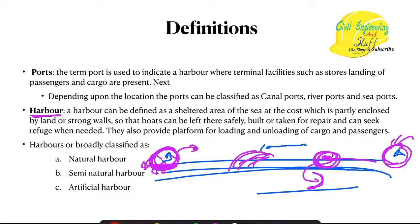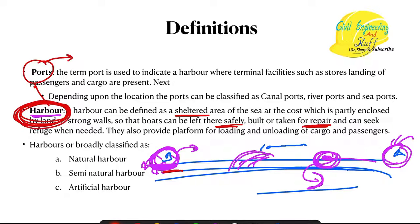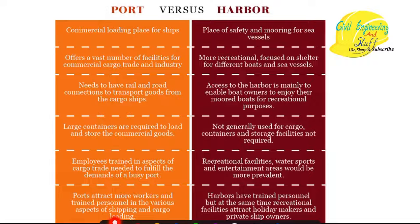A port can also act as a harbor — a port will provide facilities for the ship to take shelter as well as facilities for repair. So a port can be a harbor, but a harbor cannot be a port. Staying at a harbor means you are taking shelter or a break from your journey, while at a port the main idea is commercial exchange. A port is a commercial loading place for ships, while the harbor is used for safety or mooring of sea vessels.